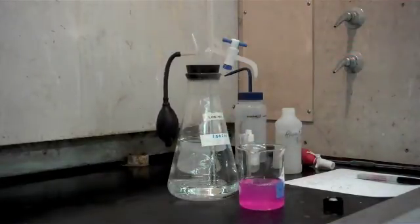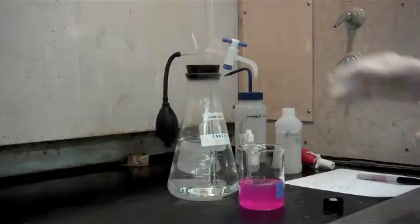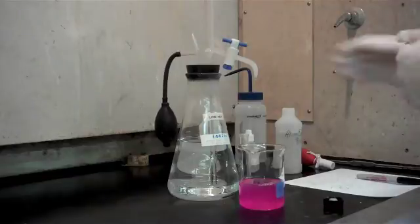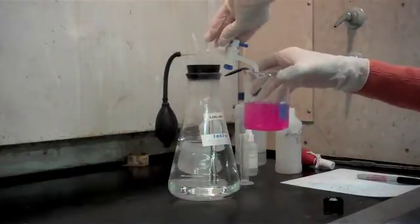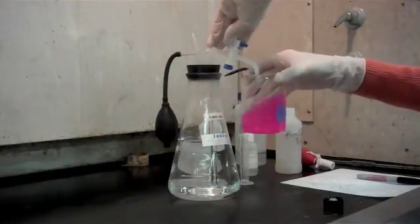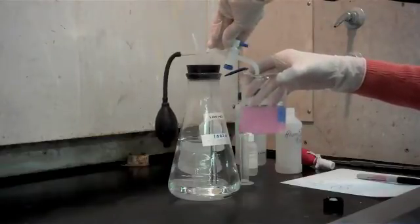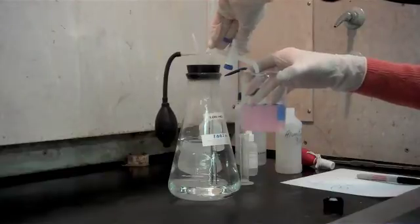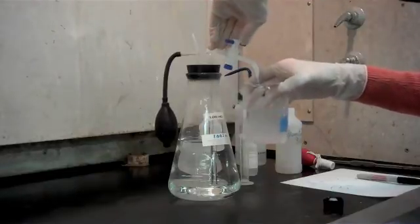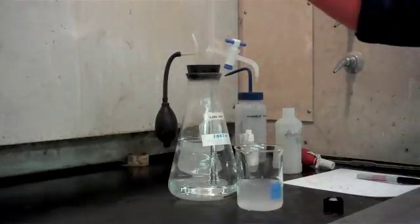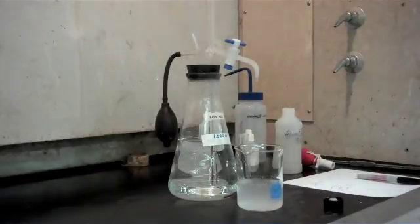What we're going to do with our zeroed out burette is titrate once again until that pink color disappears. And as you can see in this case, we used one and a half mils of hydrochloric acid.